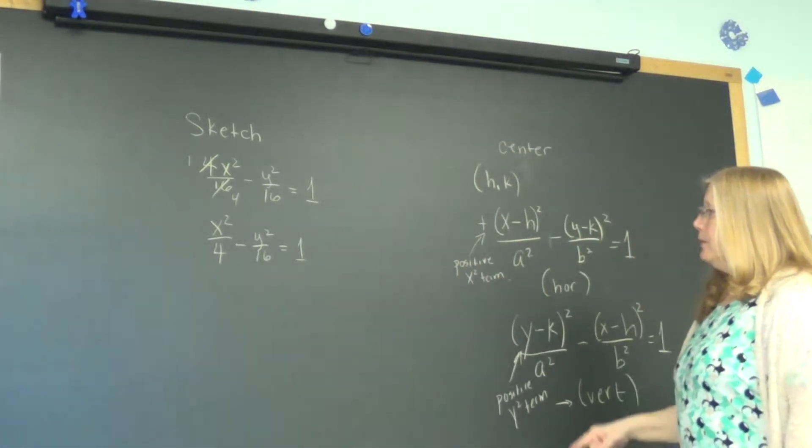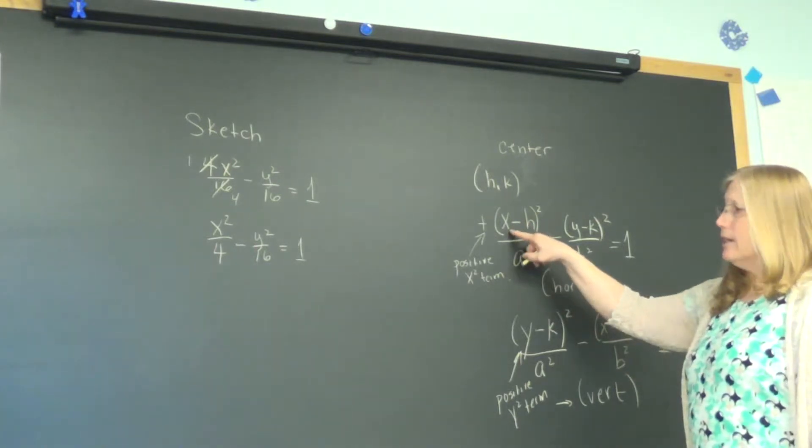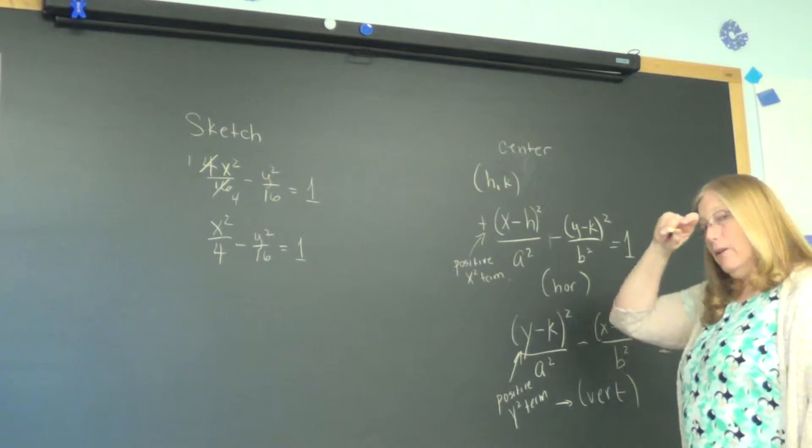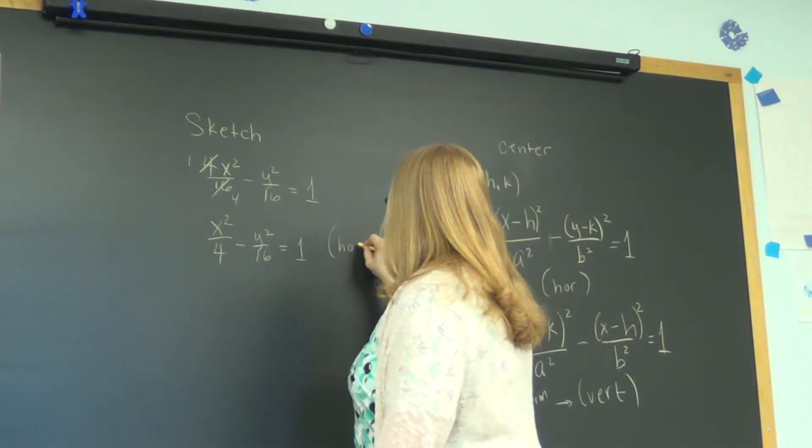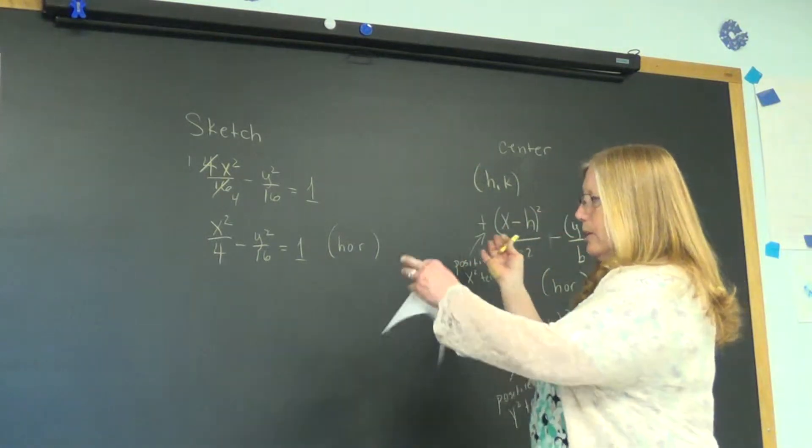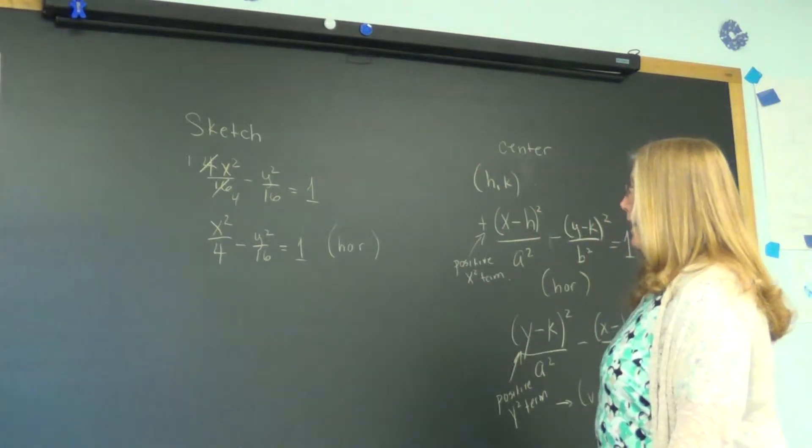This is horizontal or vertical. Our training over here said when the x squared term is positive, then it is horizontal. So we have a horizontal transverse axis. The two branches will look like the ones that we had on our example in the beginning of the class in that orientation.